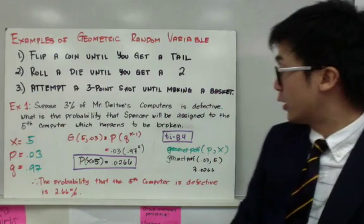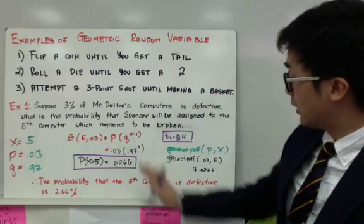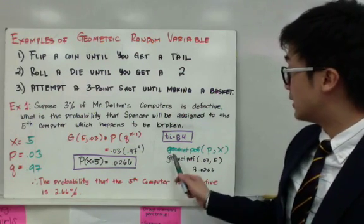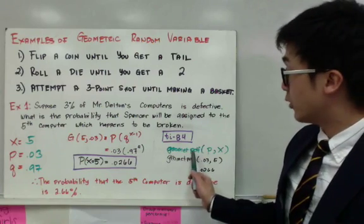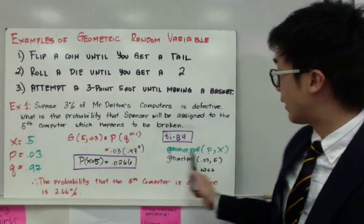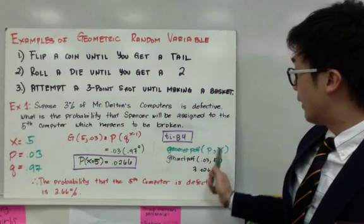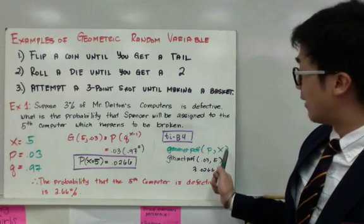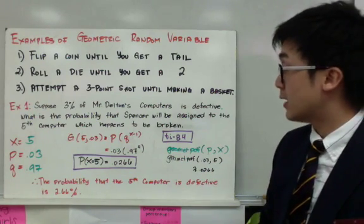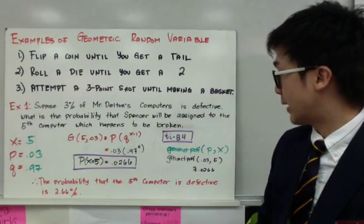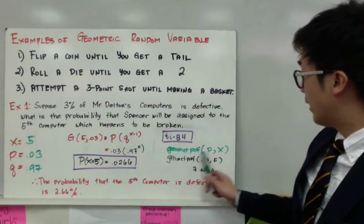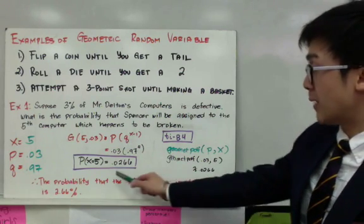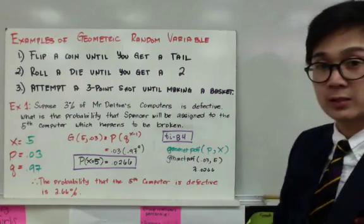If you have a TI-84 calculator, you can use the GEOMETPDF function. Since this is P(X = 5), we use PDF, and the syntax only requires the probability of success and X — you don't need the number of trials, as that is only needed for BINOMPDF. Entering GEOMETPDF with p = 0.03 and X = 5 gives the same answer: 0.0266.